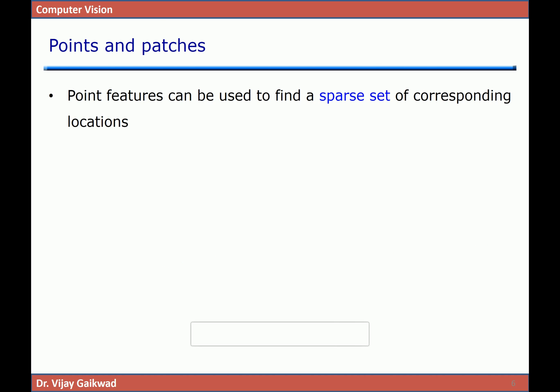Point features can be used to find a sparse set of corresponding locations. For example, in an image with a specific set of points and no other object of interest, in order to detect the object — which can be of any shape — I find three points of interest which help in detection of that object. Sparse set representation means in a given matrix or data, there are minimum 1s and maximum 0s present.